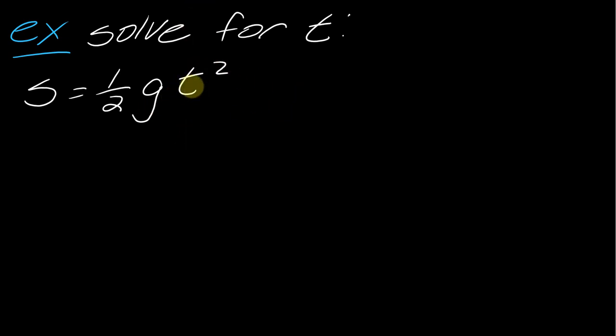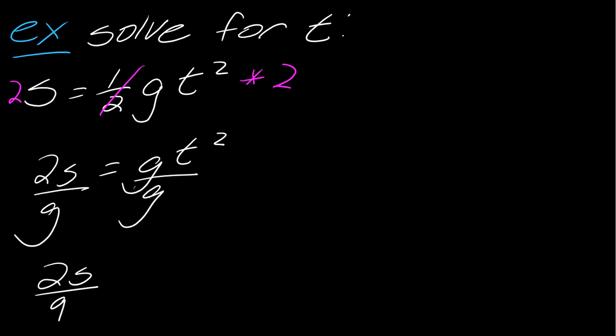what I just need to do is I need to first isolate t squared. So I just have to get rid of this one half and this g. So however you want to do that is up to you. A lot of times I think people like to get rid of the fractions, so we can do that. So I have 2s equals gt squared. And then I can also divide both sides by g to get 2s over g equals t squared.